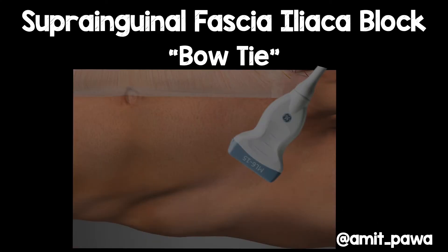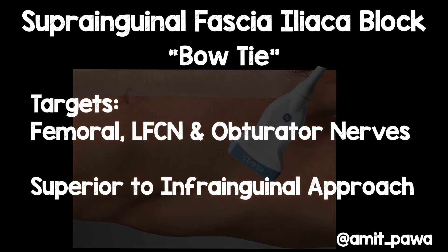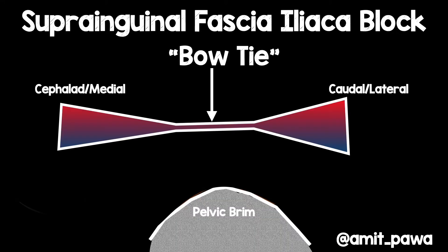So if we're talking about the suprainguinal fascia iliaca block, often we refer to this bow tie — what are we talking about? We're talking about a block that targets the femoral nerve, the lateral femocutaneous nerve, and the obturator nerves, and this has been demonstrated to be superior to the infrainguinal approach to the fascia iliaca.